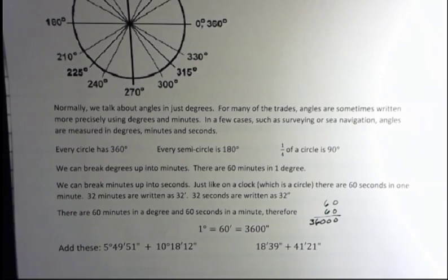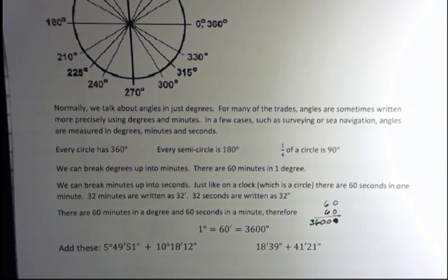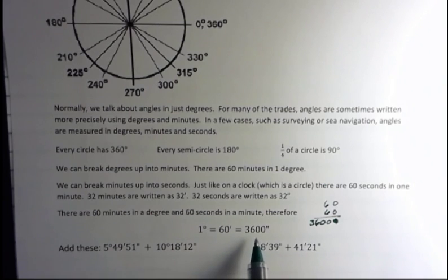So there are 60 minutes in a degree and 60 seconds in a minute. Therefore, one degree is 60 minutes or 3,600 seconds. Where'd that number come from? Well, if you take 60 times 60, that's where that comes from. 3,600. That's a lot.